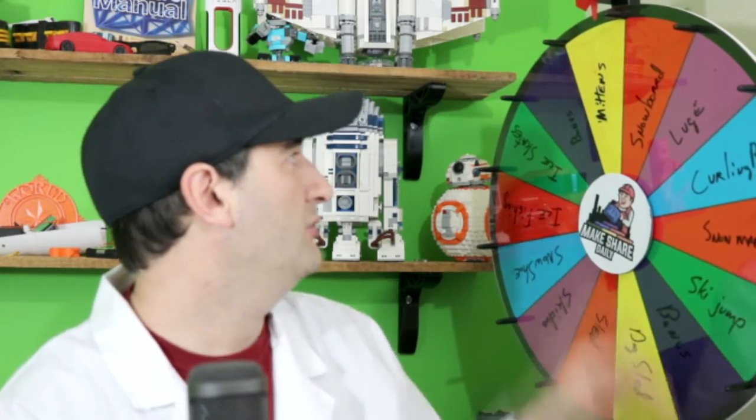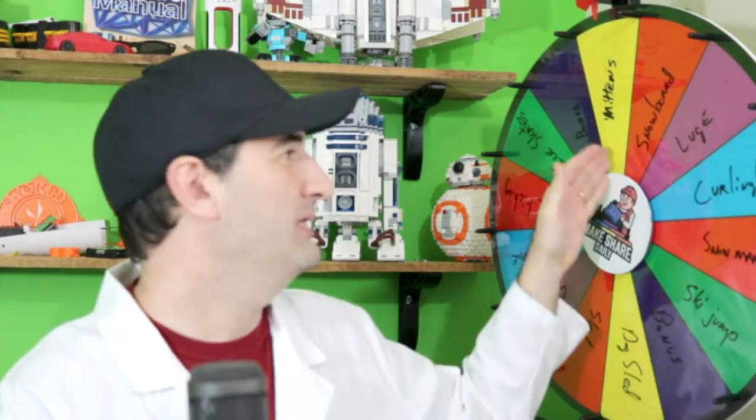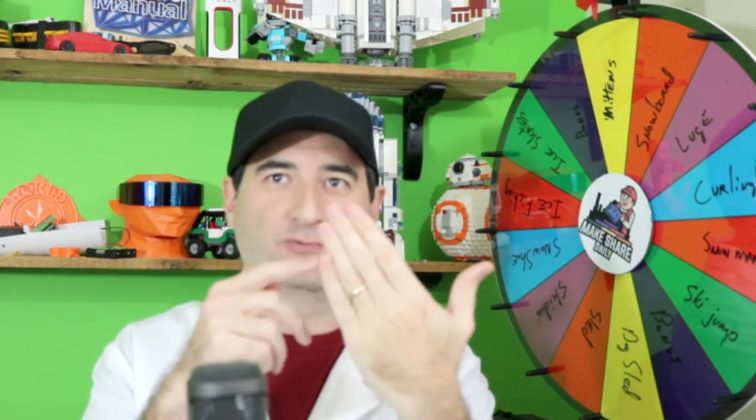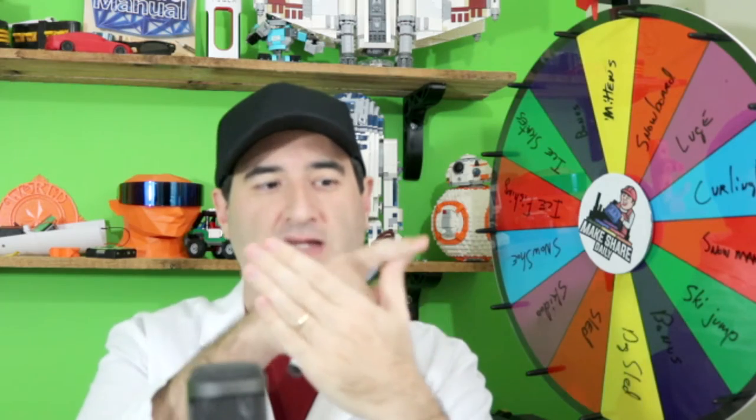So a sled, that was a cool build. Now let's spin the wheel and find out what we're going to build tomorrow. So it is mittens, mittens and kittens, right? Mittens, the mittens where you have all the fingers combined and then you have the thumb sticking out those kinds of mittens. Let's go ahead and build mittens tomorrow on tomorrow's build.